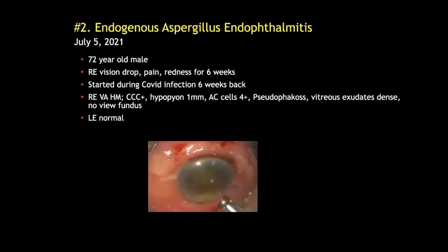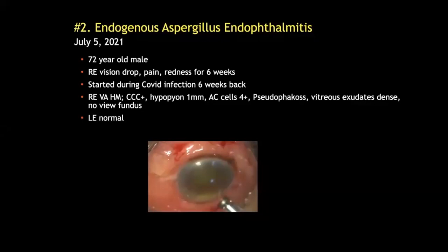Our second endogenous endophthalmitis was a 72-year-old male who was referred in July this year with features of endophthalmitis for six weeks that started during his COVID infection. He underwent vitrectomy with intravitreal antimicrobial agents. Vitreous microbiology was positive for Aspergillus flavus. He was placed on oral voriconazole with rapid initial improvement but subsequent worsening, and he is still under treatment.